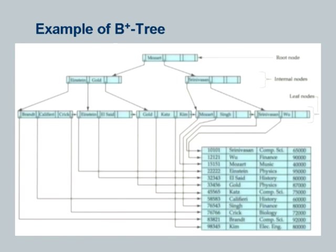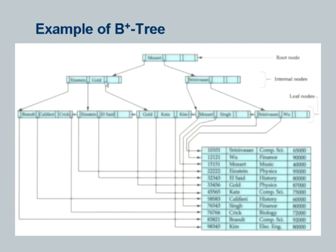B+ trees are shown rotated. The underlying file contains the records, in this case sorted on instructor ID, while the B+ tree is indexed on instructor name. The bottom layer of the B+ tree is sorted: you see B, C, E, G, K, M, S, S, and W — the names are sorted. The next level up has pointers to these leaf nodes, so it is effectively a sparse index on the leaf level. Each key value at the leaf has a pointer to the corresponding record in the file.